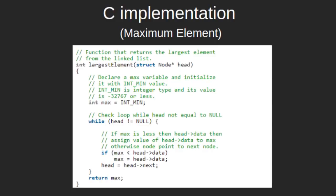Let's see the C implementation of finding the maximum element. The return type of this function is int, since it will return the maximum element which is of integer type. The function takes one argument — the head of the linked list. Inside this function, the variable max is declared and initialized with INT_MIN.